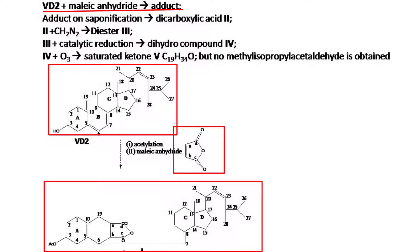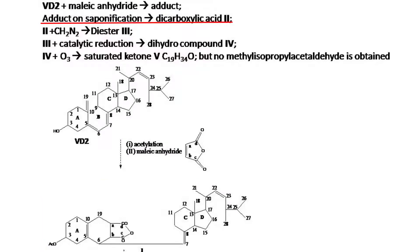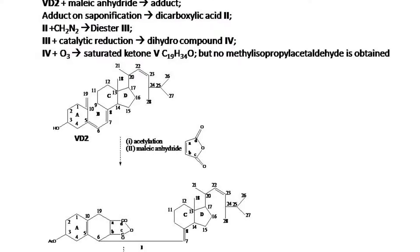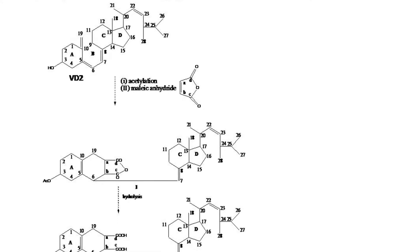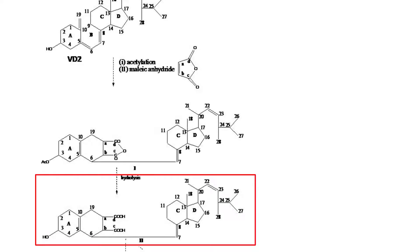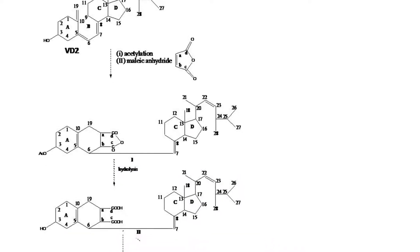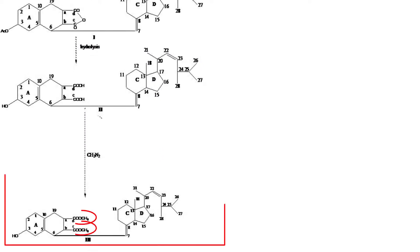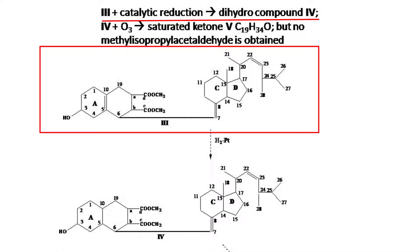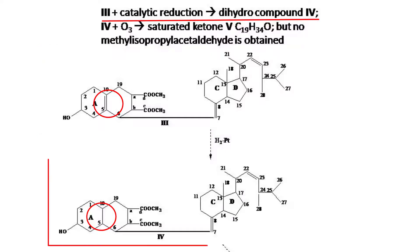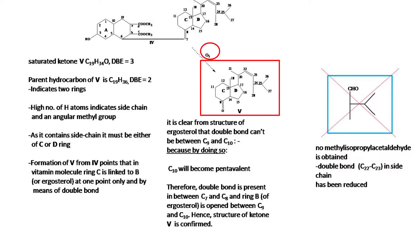Vitamin D2 on treatment with maleic anhydride gives an adduct. This adduct on saponification (hydrolysis) gives a dicarboxylic acid (second). Second on treatment with diazomethane gives a diester (third). This diester (third) on catalytic reduction gives a dihydro compound (fourth). Fourth on ozonolysis gives a saturated ketone (fifth) with molecular formula C19H34O, but no methyl isopropyl acetaldehyde is obtained.